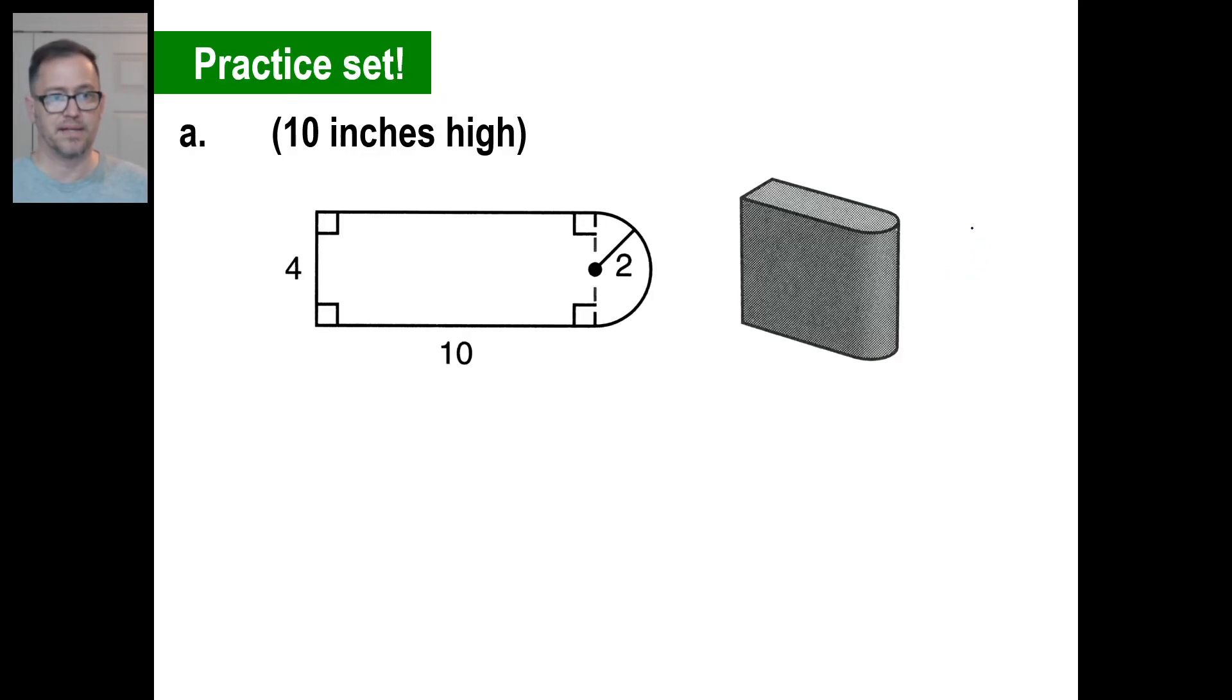Okay. We have three of these. So go ahead and pause it and try A and come back. All right. This is 10 inches high. All we need to do is find the area of the base. So 4 times 10. This part's 40. Then we have the area of a circle is pi, 3.14, times the radius squared. Well, 2 squared is 4.